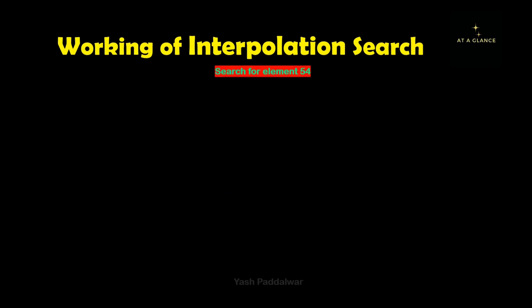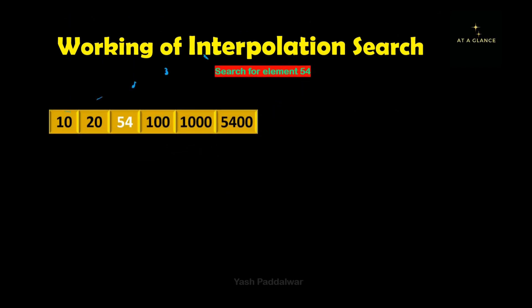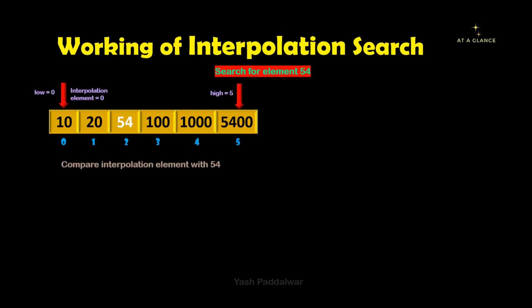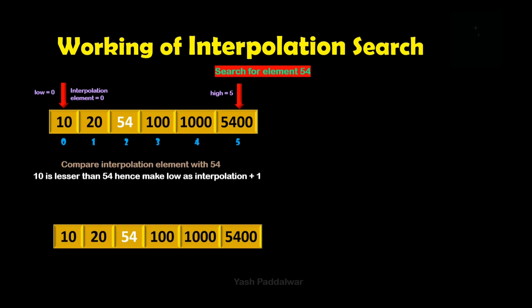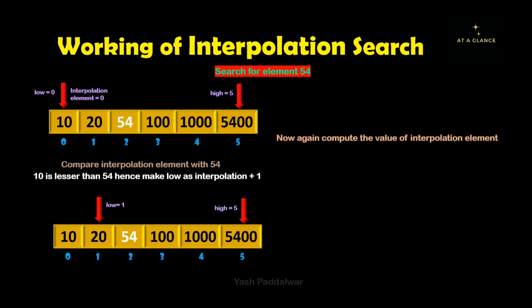The next step is to compare the element at the interpolation position with the element to be searched. Our element to be searched is 54 and the element at the interpolation position is 10. Clearly, 10 is not equal to 54, but 10 is less than 54. Therefore, we will make low as interpolation plus 1, so our new low will be 0 plus 1, which is 1.